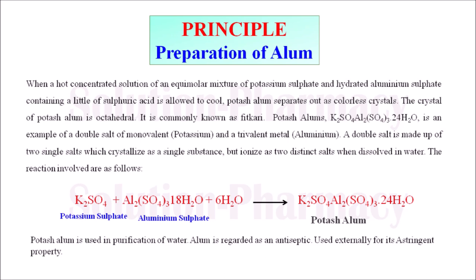First of all, let's understand the principle of preparation of potash alum. We can prepare potash alum in crystal form from a mixture of concentrated solution containing an equimolar amount of potassium sulfate and aluminum sulfate.